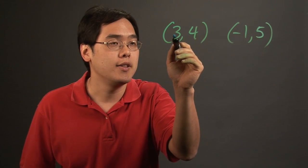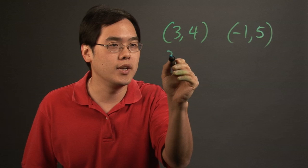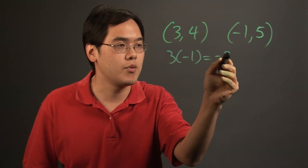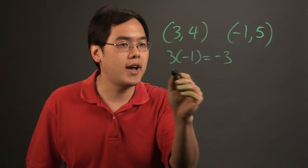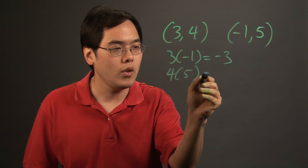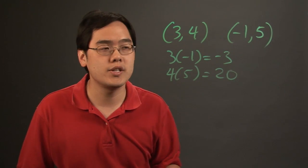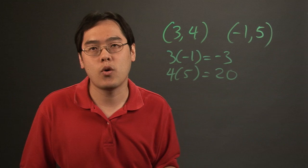So if you're going to multiply the x-coordinates, it's 3 times -1, which is going to be -3, and then 4 times 5, and that's going to be 20. So you multiply the x-coordinates and then you multiply the y-coordinates.